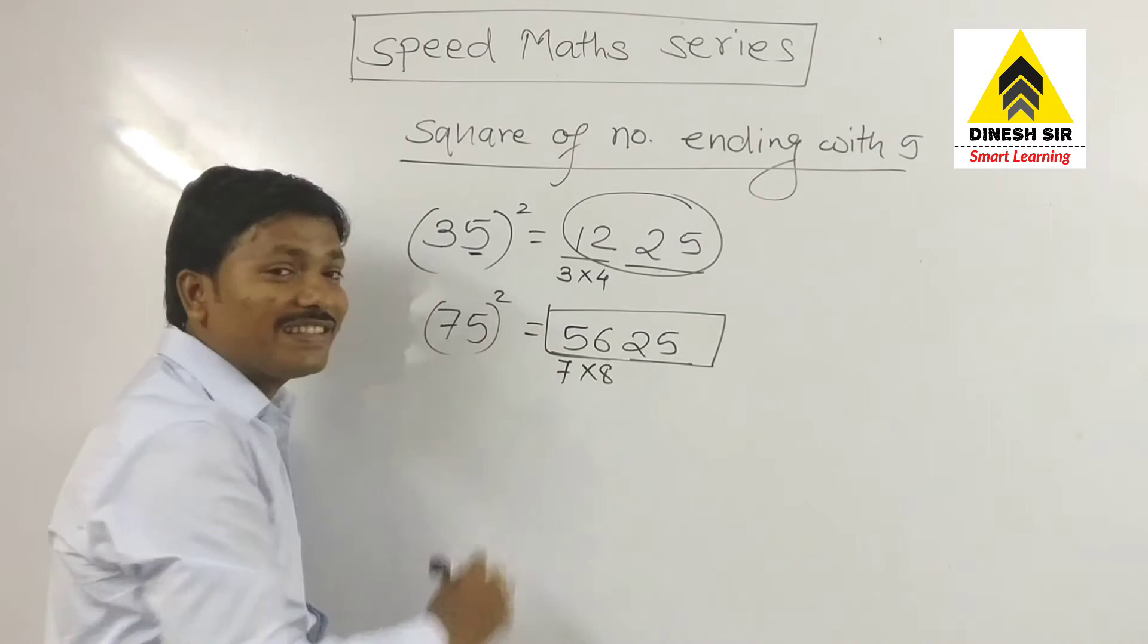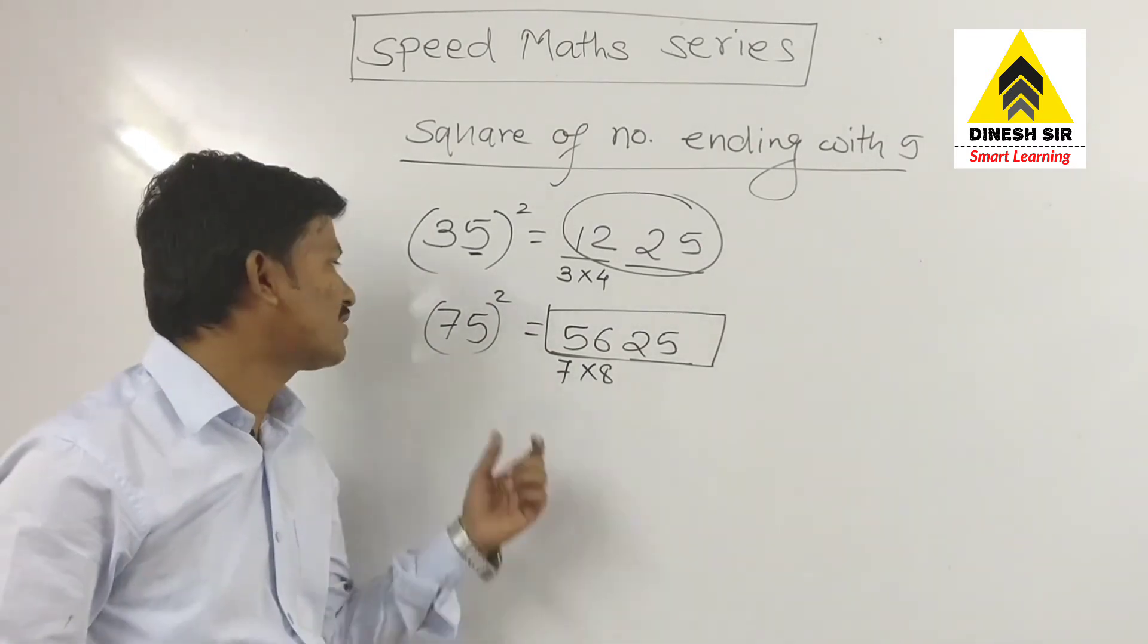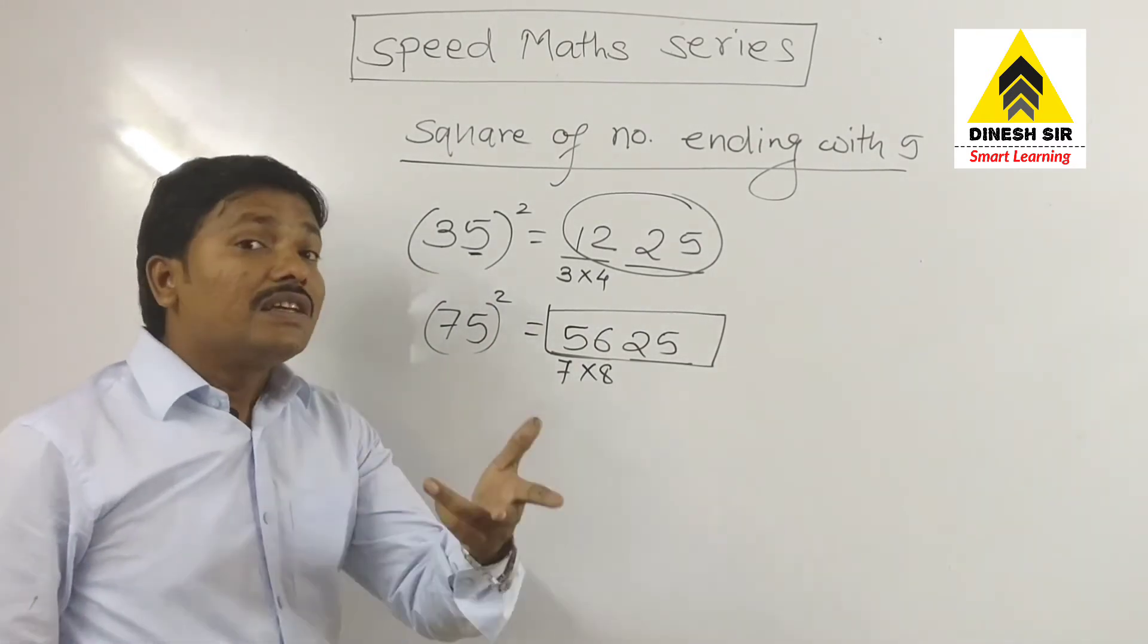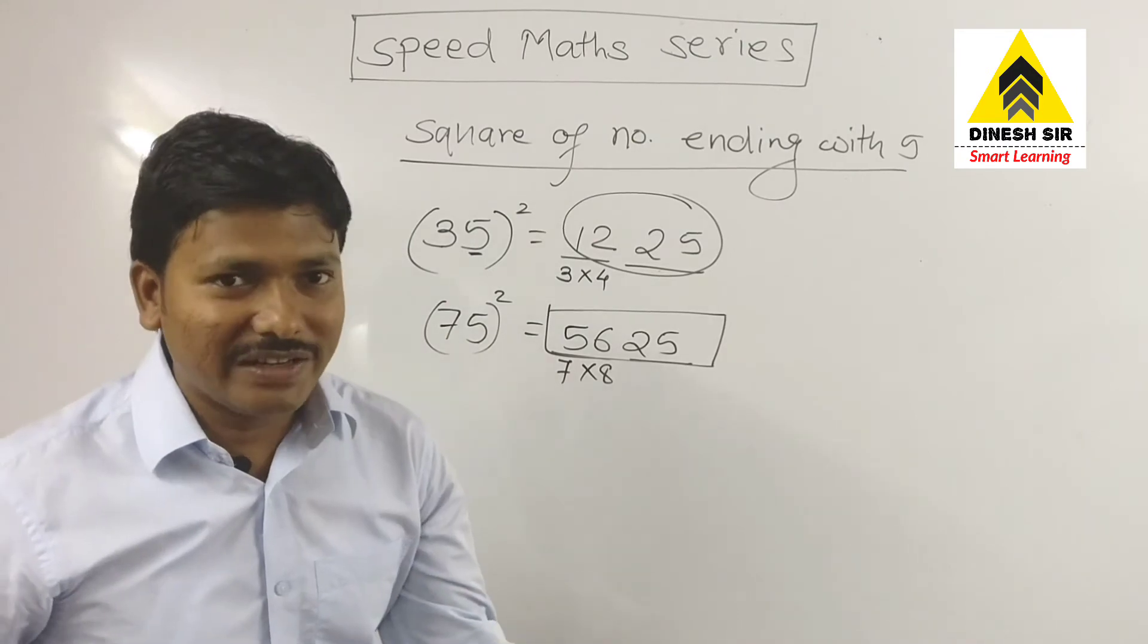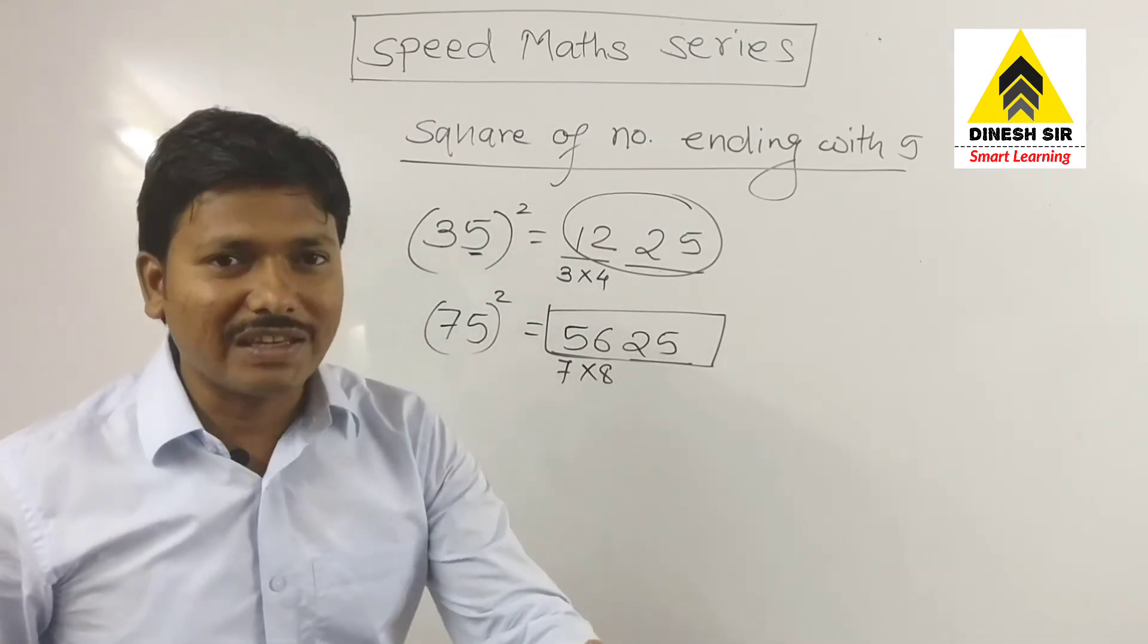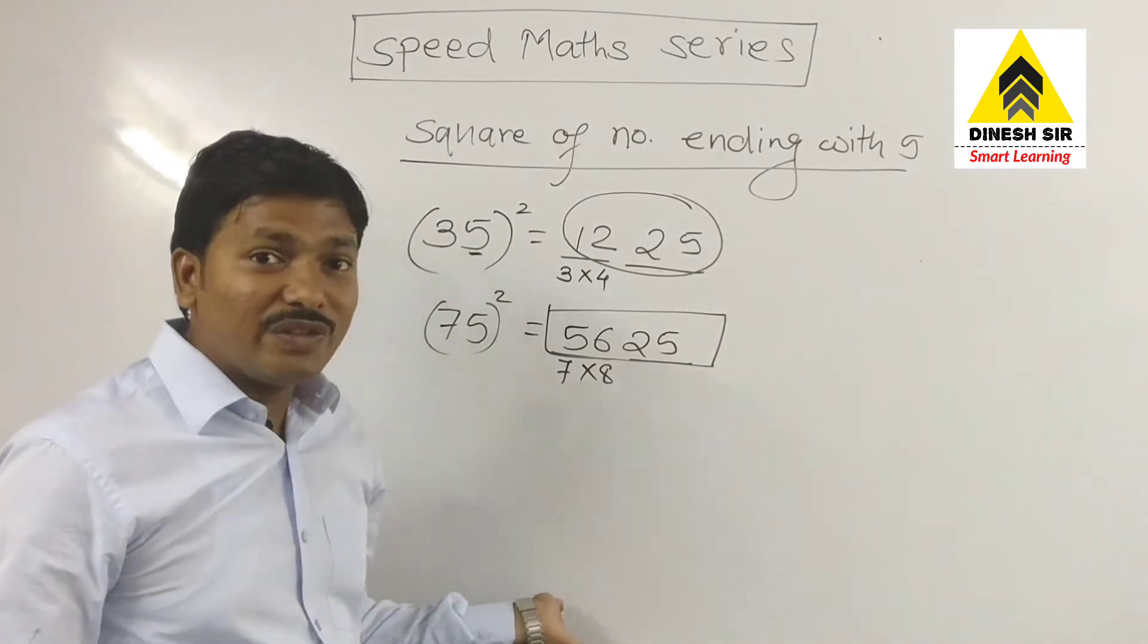So here we get the answer 5625 as a square of 75. This we can do without calculator and in few seconds. One more example without explanation.